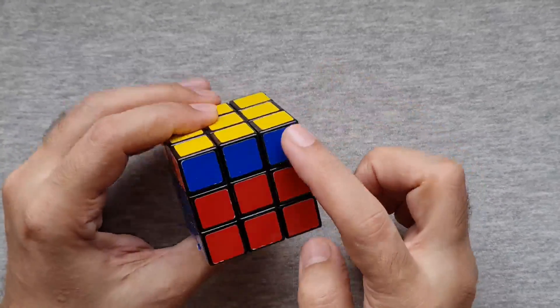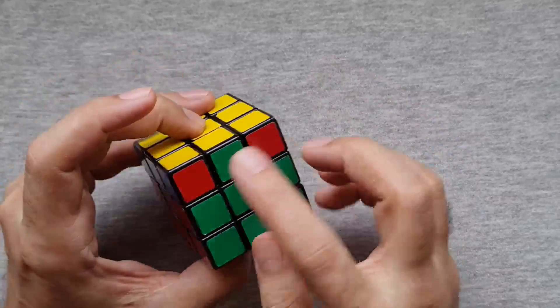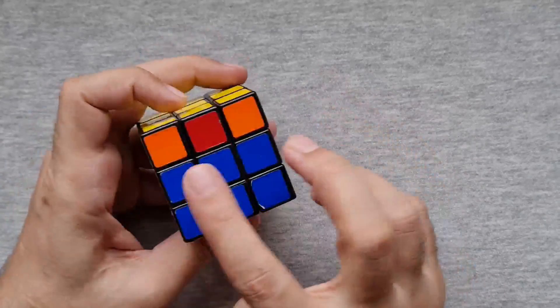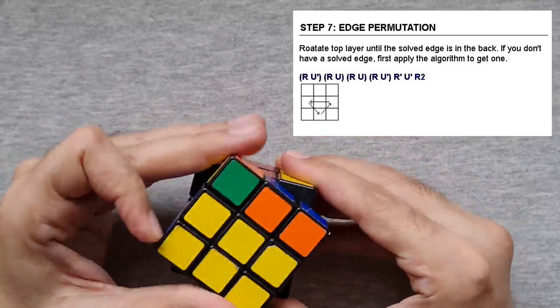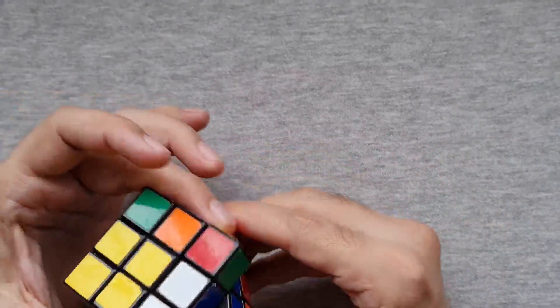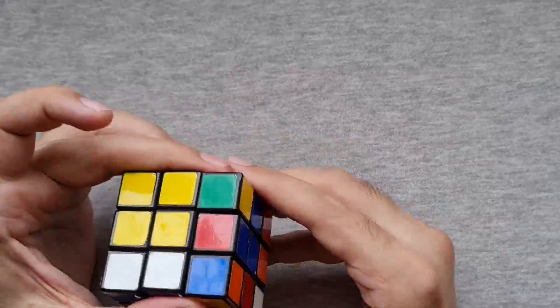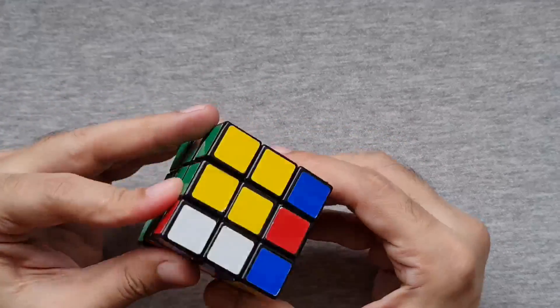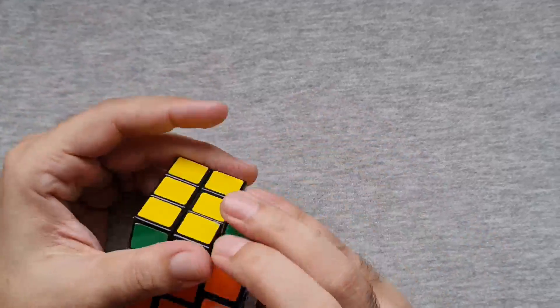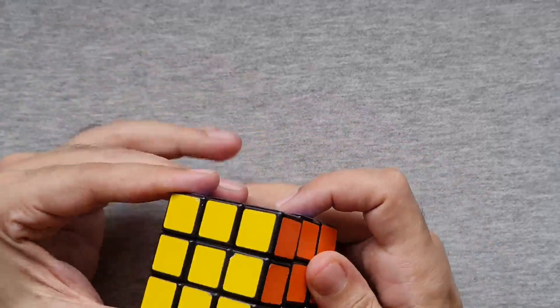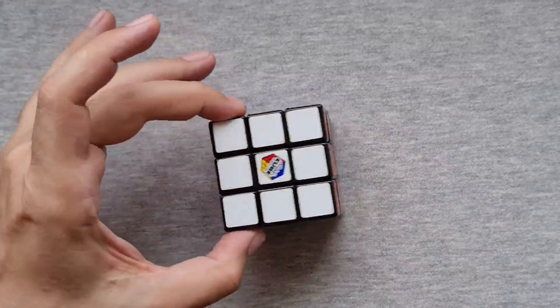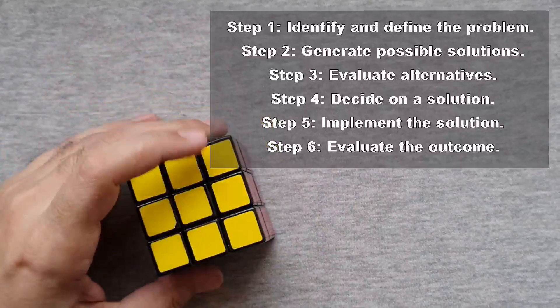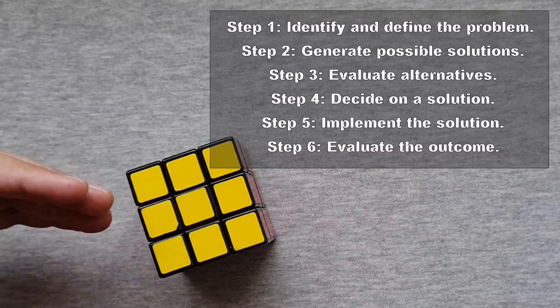All right, now these two match. Excellent. Now we're going to try and get these sorted out. So let's try that. And guys, there you have it—a solved Rubik's Cube following the six steps of problem solving.